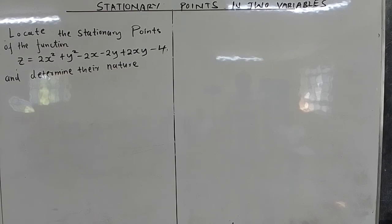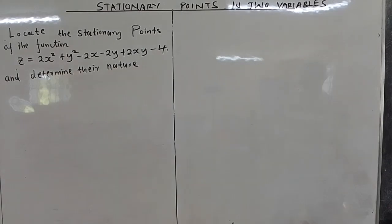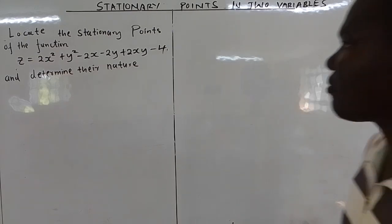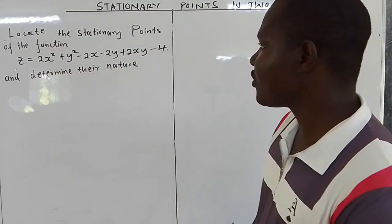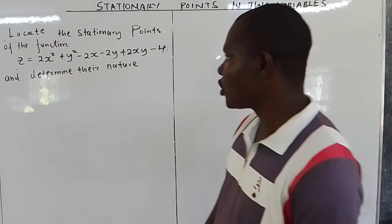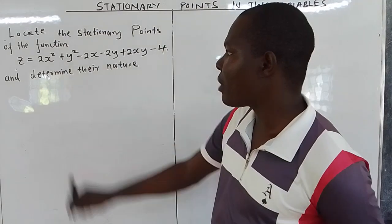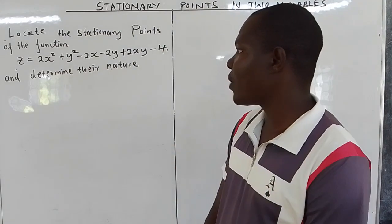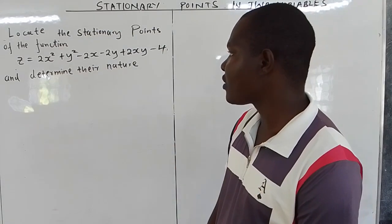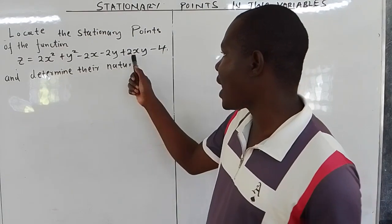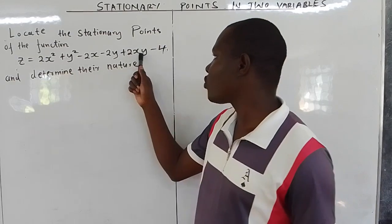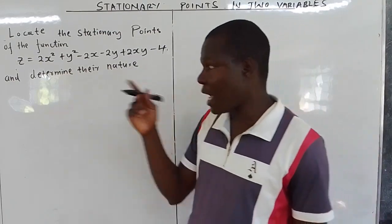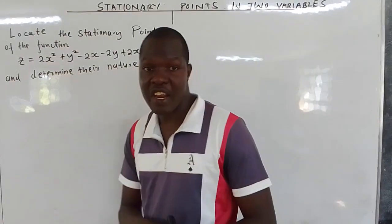The next example, from stationary points in two variables, we are told to locate the stationary points of the function z equals 2x squared plus y squared minus 2x minus 2y plus 2xy minus 4, and determine their nature.